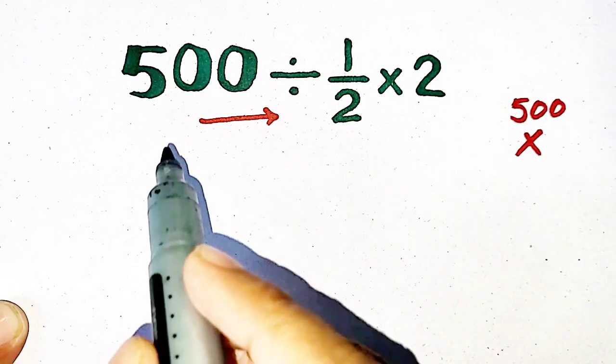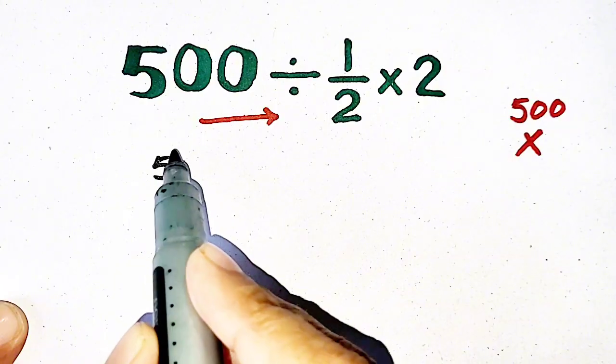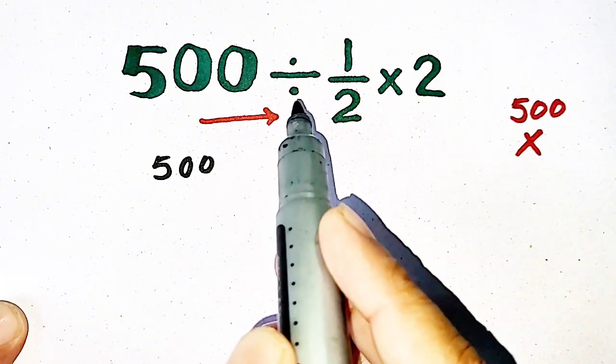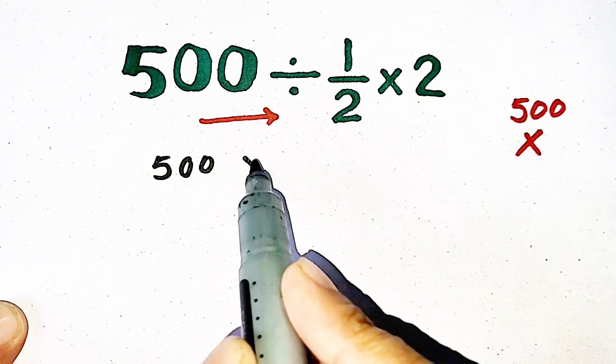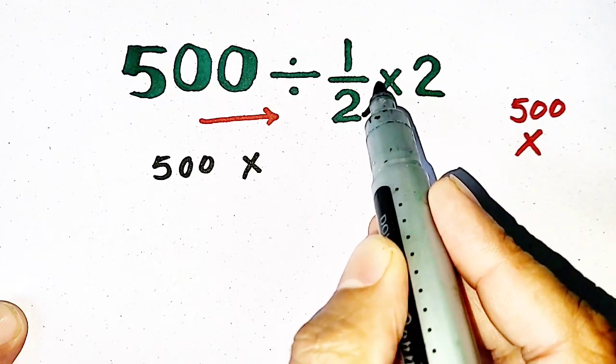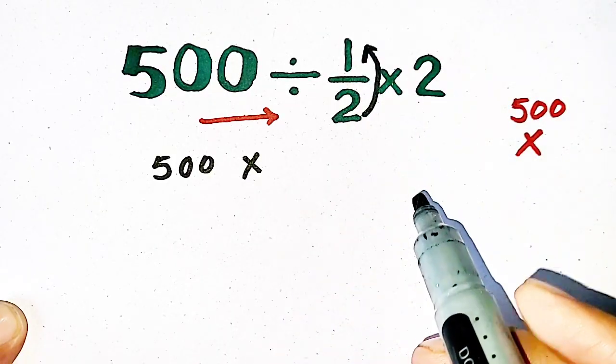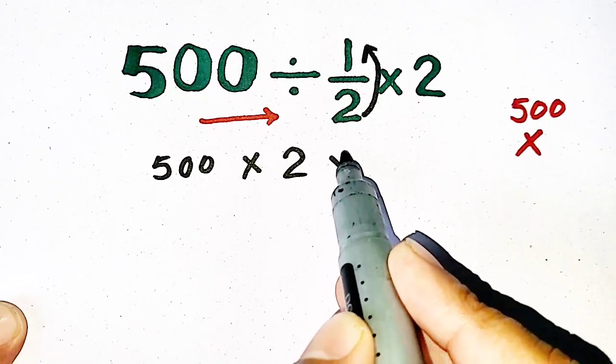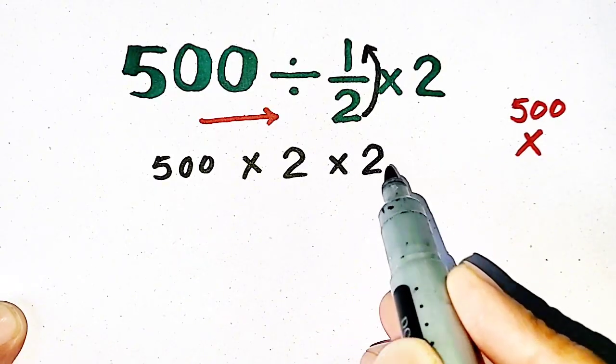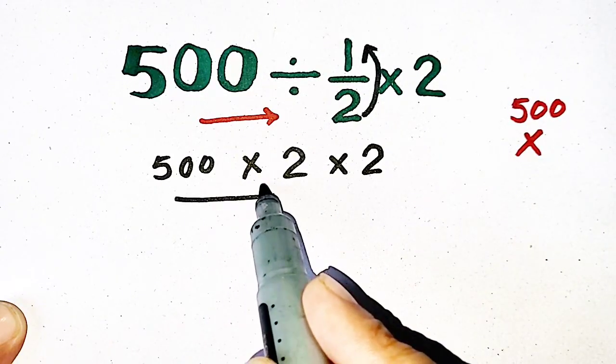So 500 will be written as it is, division is converted into multiplication, and we have to flip 1/2 - it will become 2/1, and here is already 2. Now again we have to move from left to right.